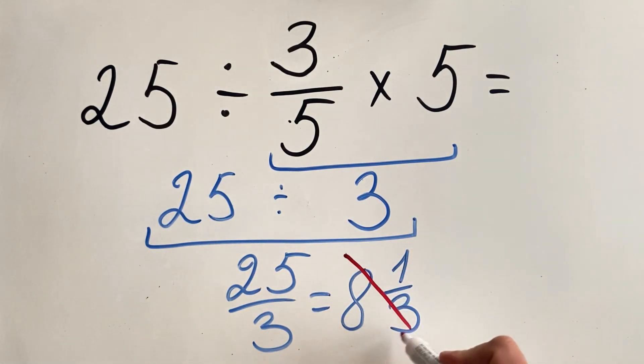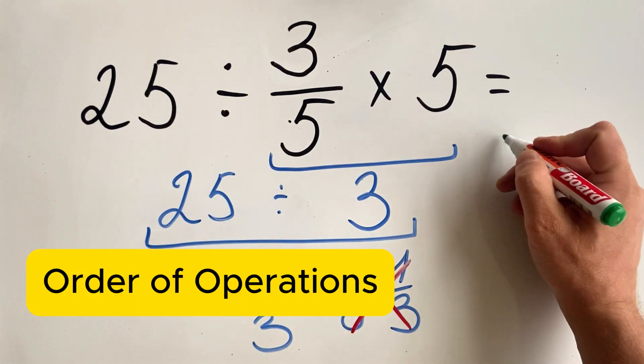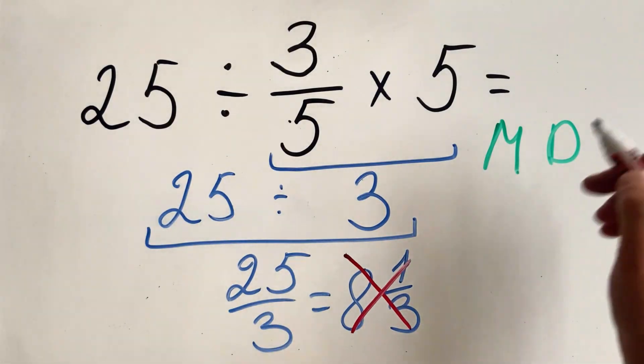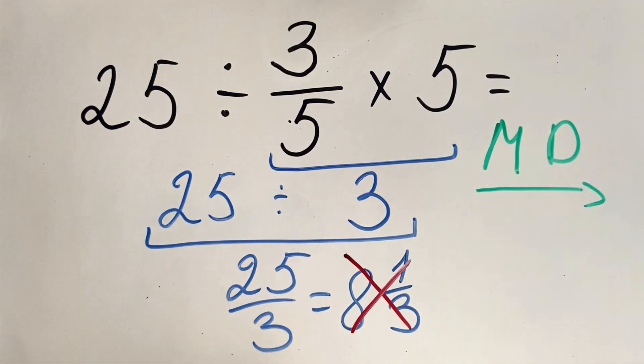But this answer is not correct because according to the order of operations, multiplication and division need to be done from left to right.